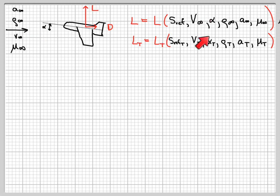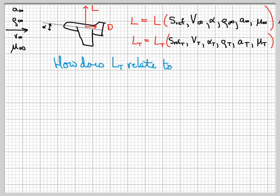The overall question is: how does the lift in the tunnel or the scaled test relate to the lift of the full-scale version? To get an understanding of that, we're going to use the Buckingham Pi Theorem. The Buckingham Pi Theorem relates the number of dimensional units in the problem to the number of parameters in the problem.